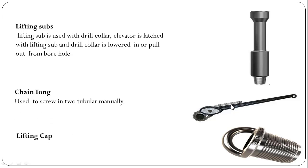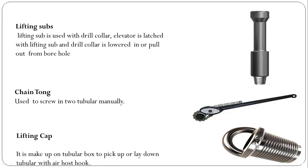Chain tong. It is used to screw in two tubulars manually. This is a picture of the chain tong.